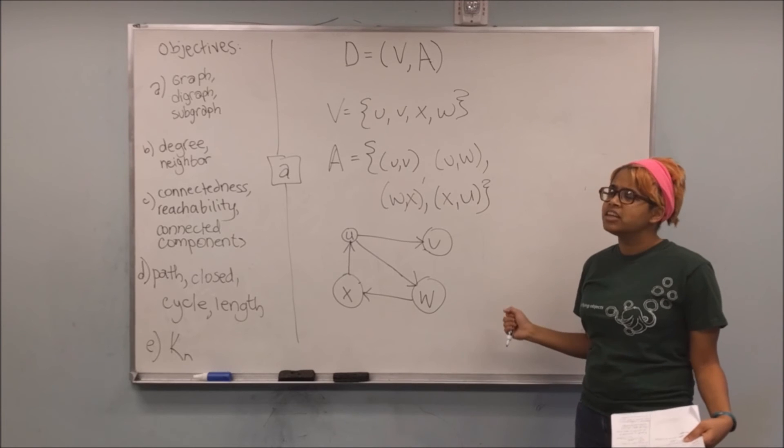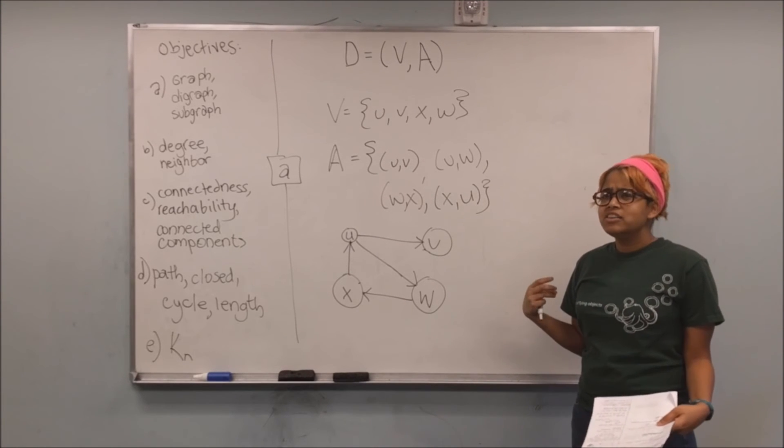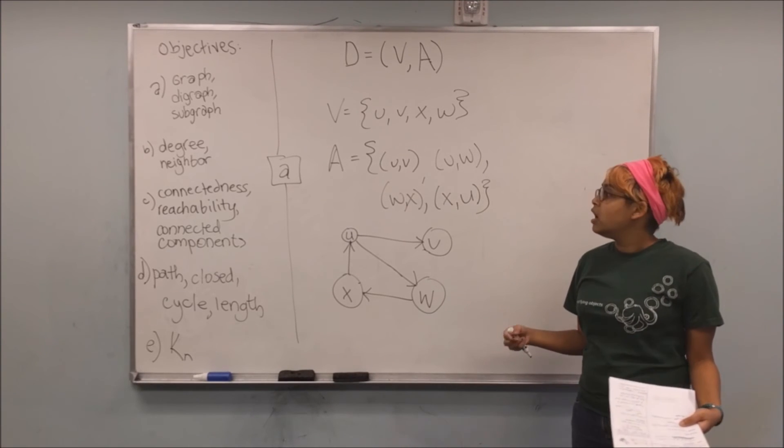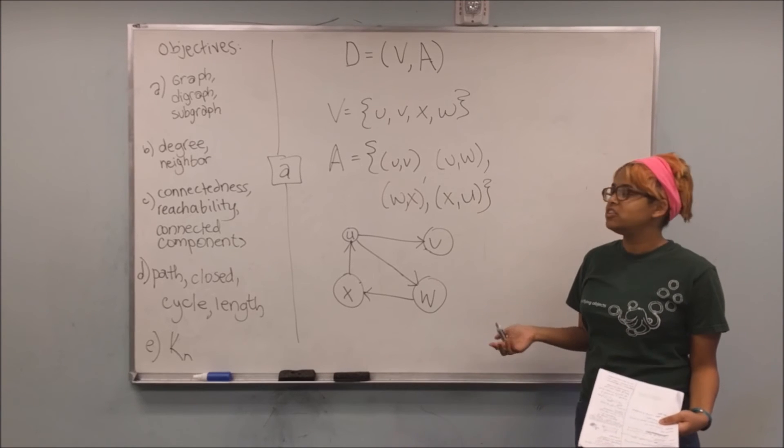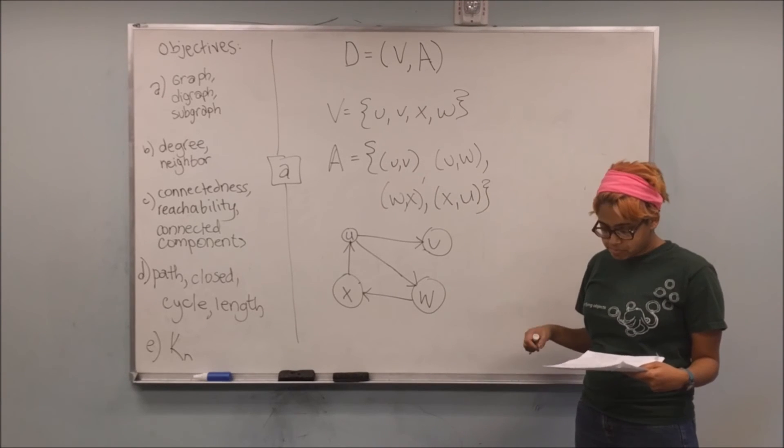the way I represented that was by drawing arrows to show the direction. And then just to kind of make things nice and tidy and clear, I have A. So A in this case, the reason I use that, it represents arc. You can still say edge, but it just seems kind of nice to say arc because that shows what those directions are. All right,